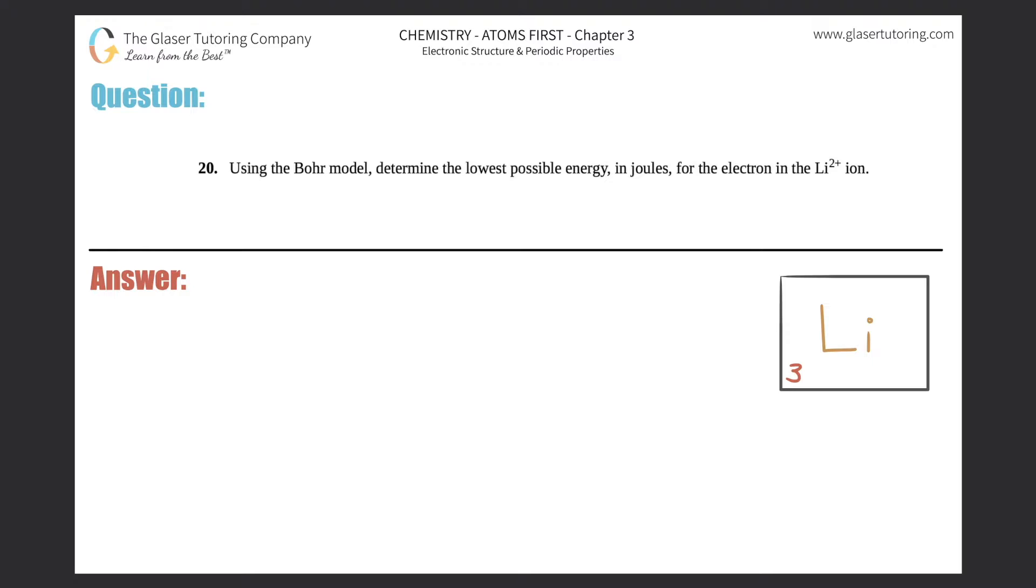Number 20. Using the Bohr model, determine the lowest possible energy in joules for the electron in the Li2 plus ion.